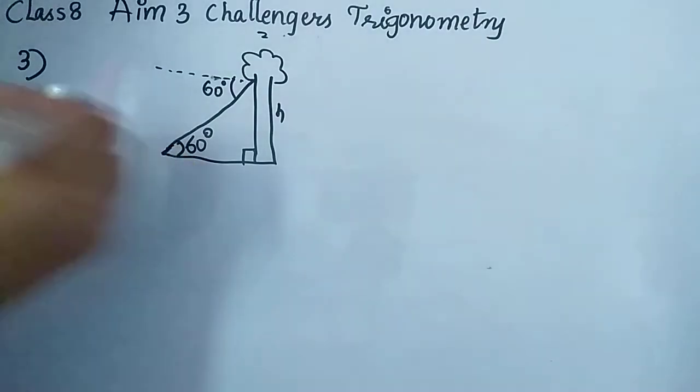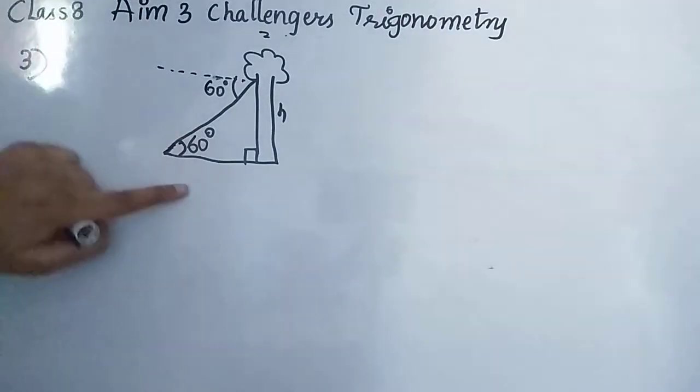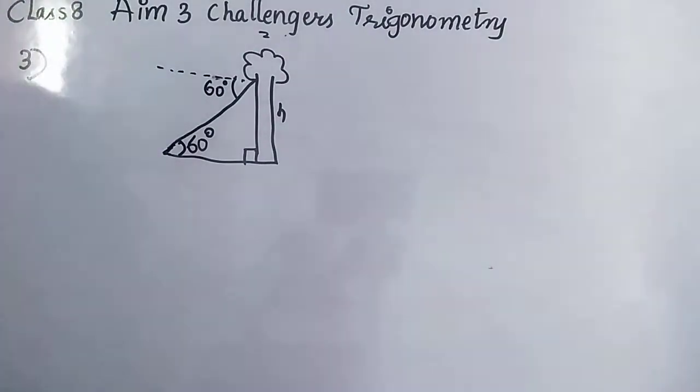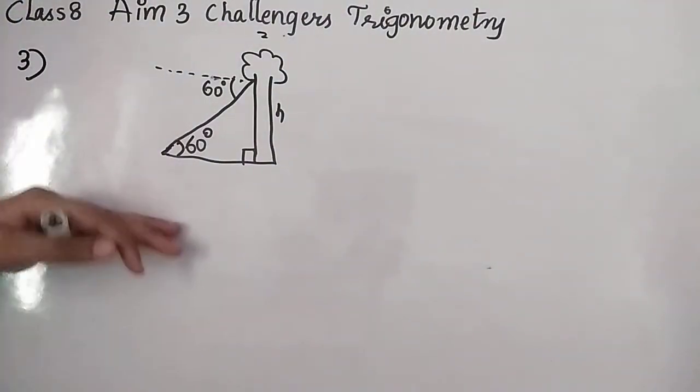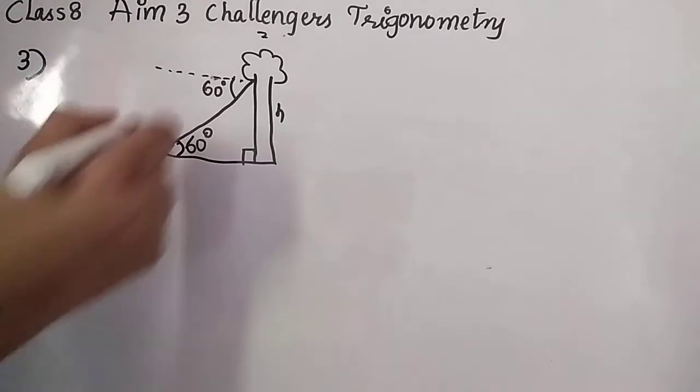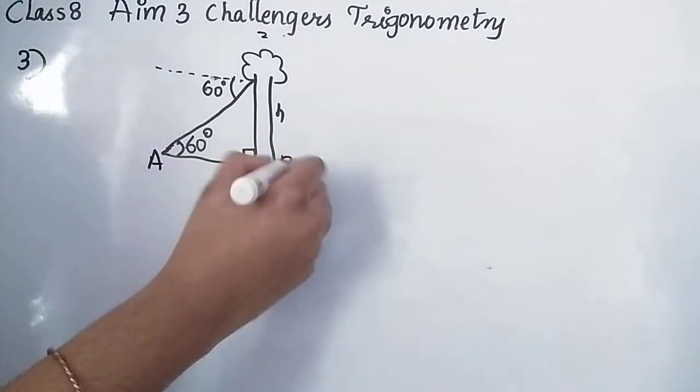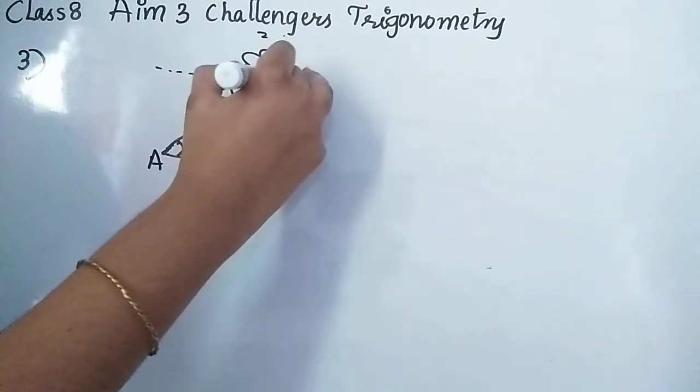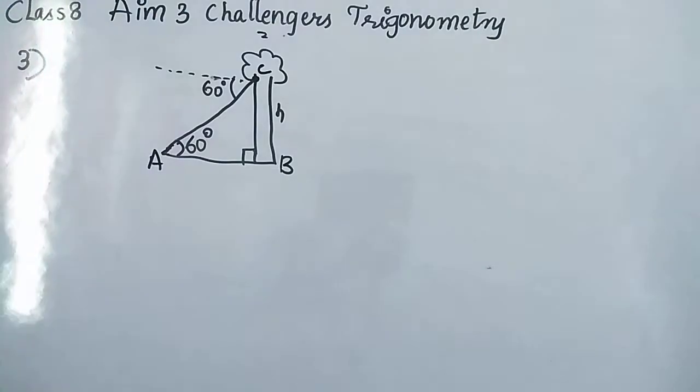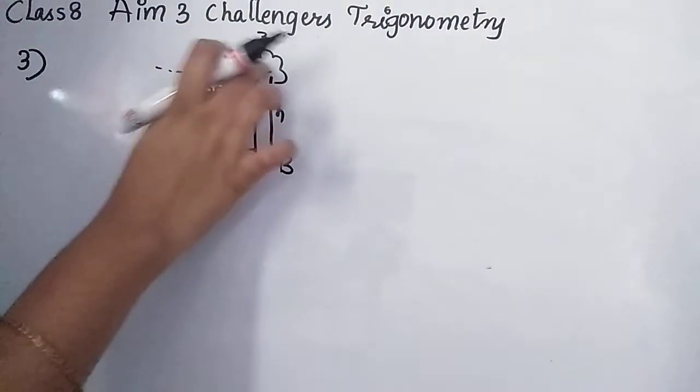That's why I wrote it first. Actually first you should write this then only this. Okay, remember very much important. Now what we are supposed to do. Name it first. It will be using A, B. This point, only this one I am considering C. Or else instead of this, one second, let me see.